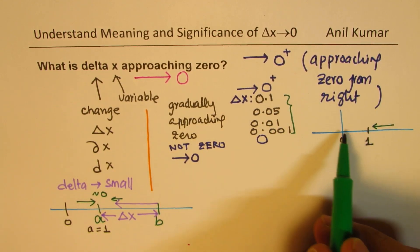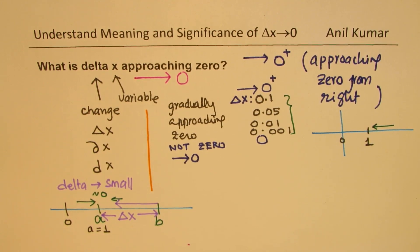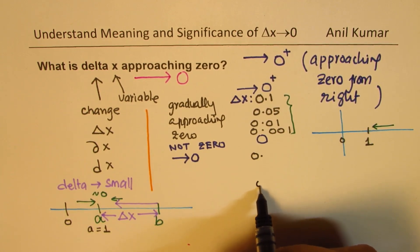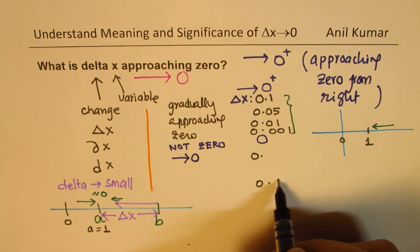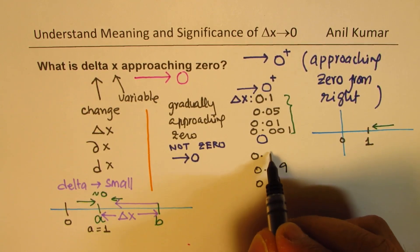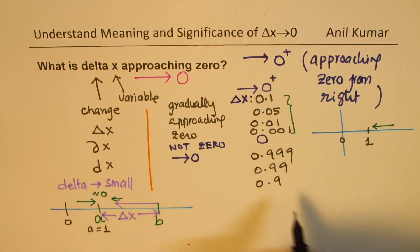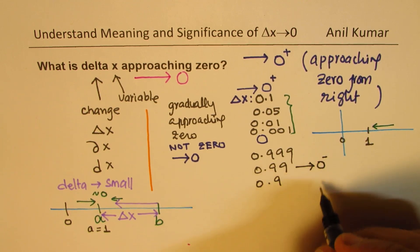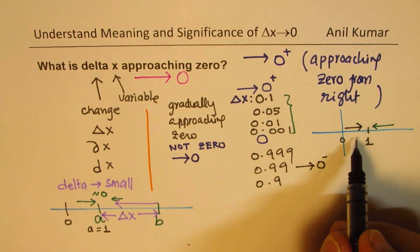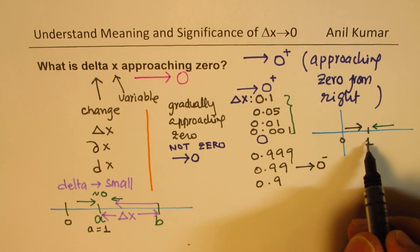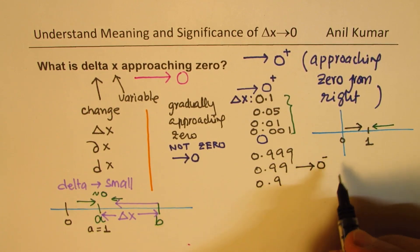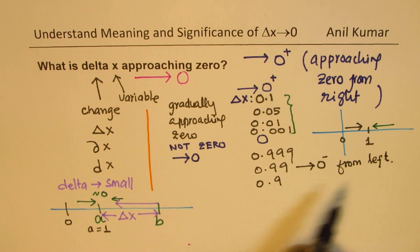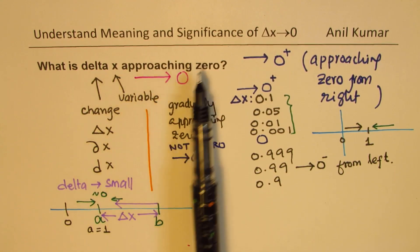But we could also approach 1 from the left side — we could calculate values like 0.9, 0.99, 0.999, something like this. In that case, we are approaching 0 from the left side — this is approaching from the left. The value of 0.9 will be on the left side of 1. So that is approaching from the left. That is the basis of approaching 0.